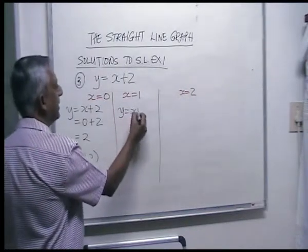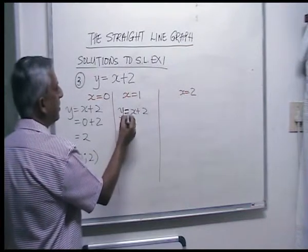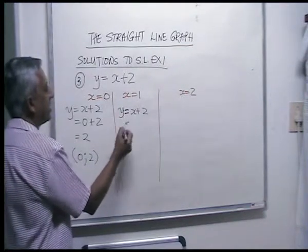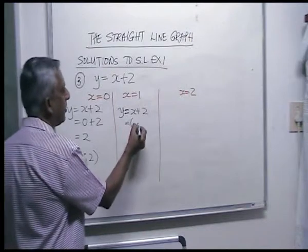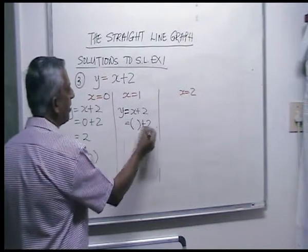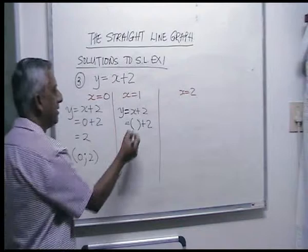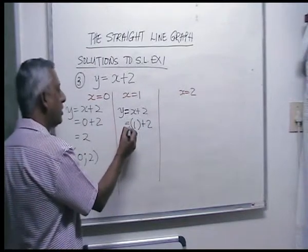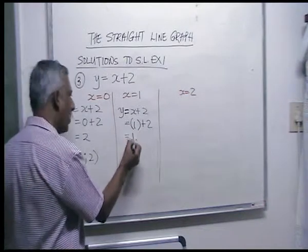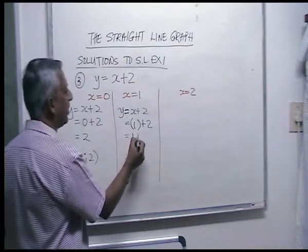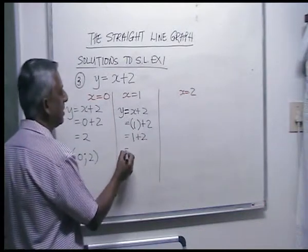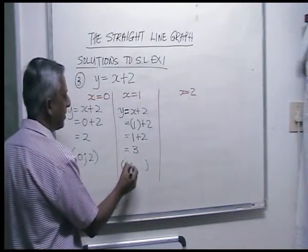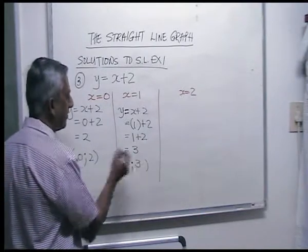For x is one: y is equal to x plus two, so one plus two is three. Your ordered pair is one, three.